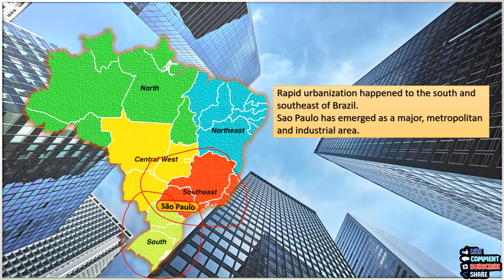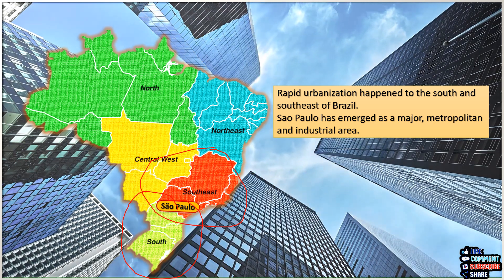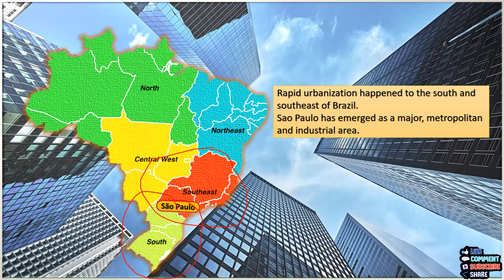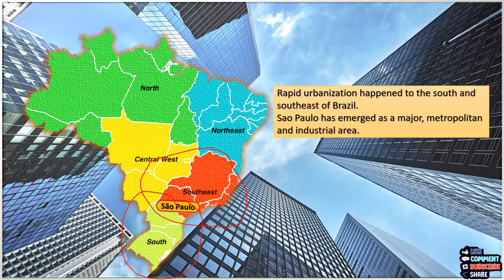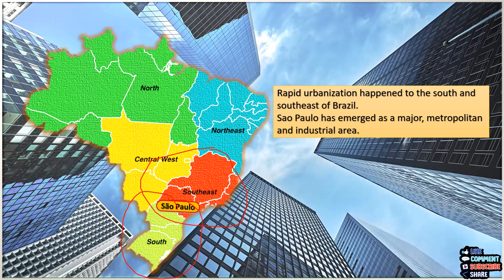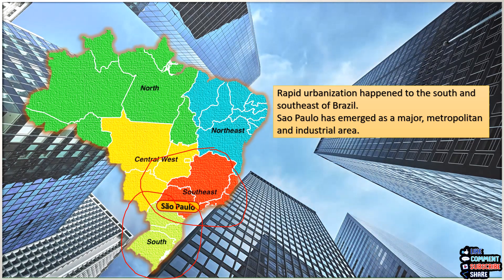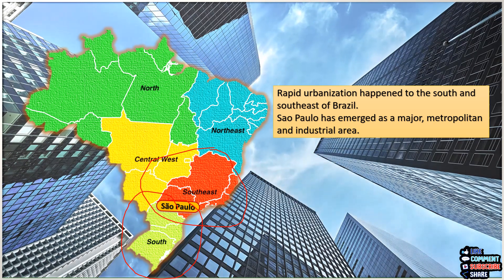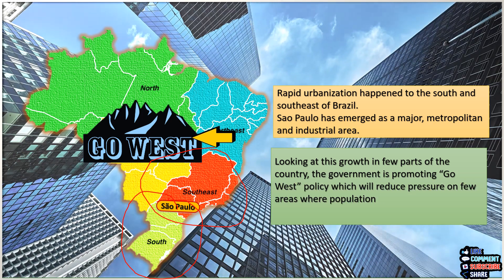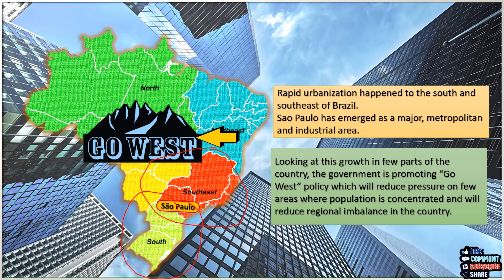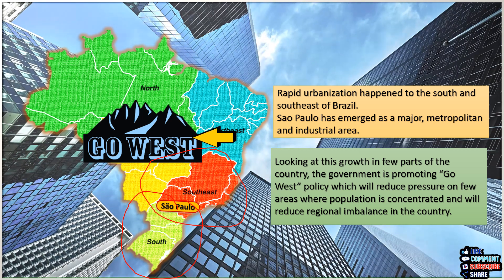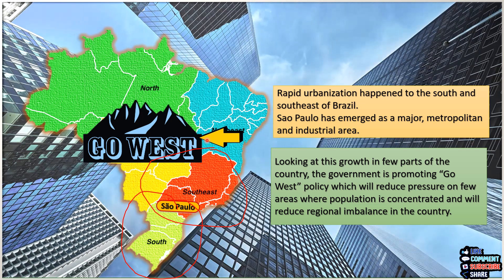São Paulo has emerged as a major metropolitan and industrial area due to favorable conditions. There is also a lot of production of coffee in this region due to fertile soil, favorable climate, and availability of water. Due to all these factors, the government is promoting the 'Go West' policy, which will reduce the pressure on the few areas where population is concentrated and will reduce the regional imbalance in the country.